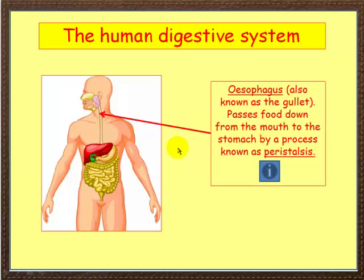The food is then passed down the oesophagus, also known as the gullet, and it passes food down by a process called peristalsis.